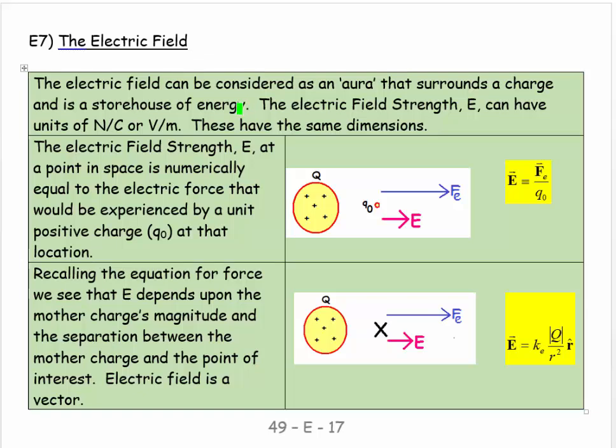It's trying to describe something which is subtle. The electric field strength E can have units of newtons per coulomb or volts per meter. These might sound like completely different things but if you look at them dimensionally they come out to have the same dimensions.